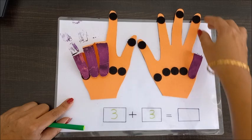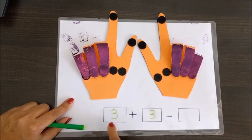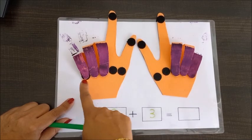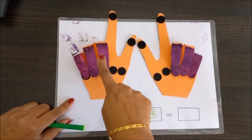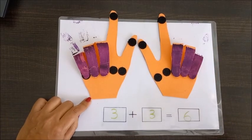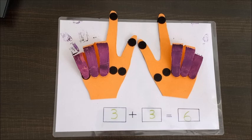So three plus three, we will ask the child to count the purple fingers which are folded: one, two, three, four, five, six. So the answer will be six. So this way we can teach the addition to the child through this TLM.